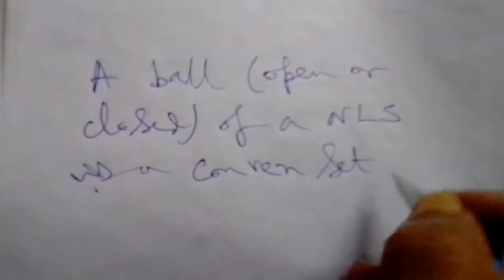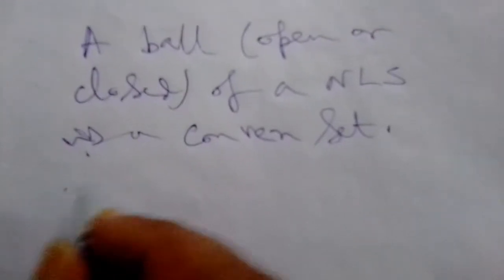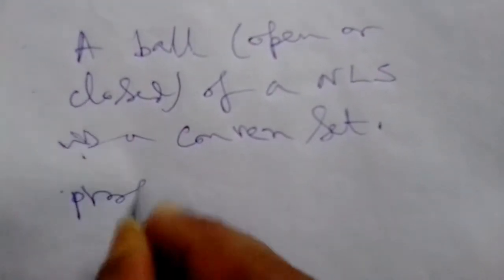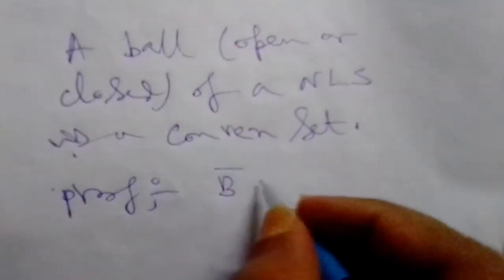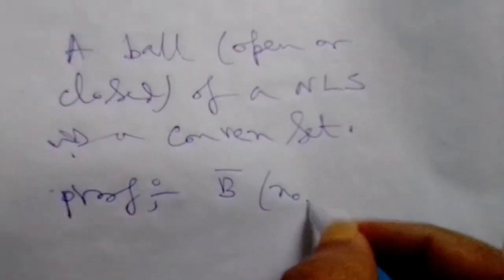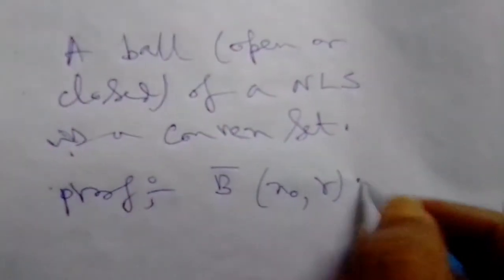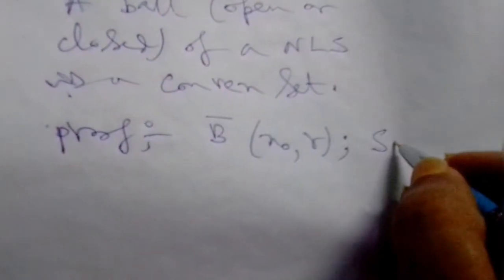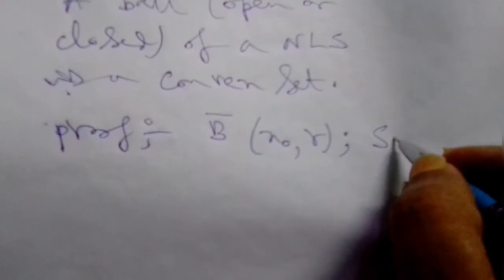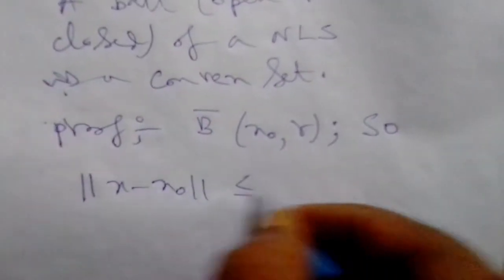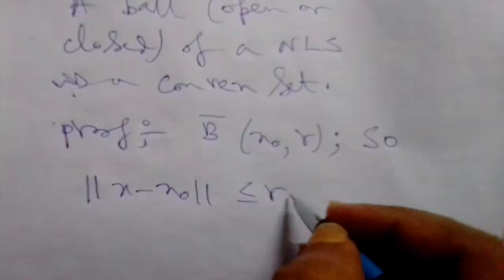Then how to prove this result. At first, if we are taking a part of proof, if we take it as B̄(x₀, r), if we take this notation as for closed ball, we know earlier what it is, and then by definition it is norm ||x - x₀|| that will be less than or equal to r, if we are taking x₀ as the center, r as the radius.